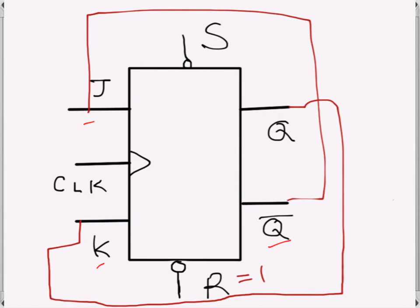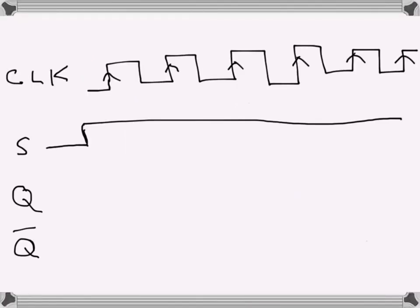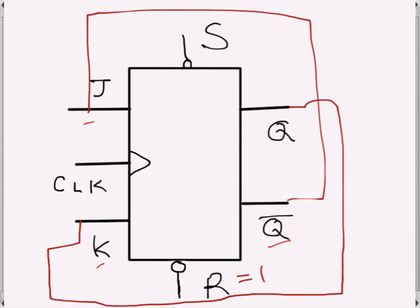There are S and R inputs, both with bubbles meaning they are active low. R is set to one, so reset is inactive throughout. The waveform of S is given here, and the clock signal is also given.